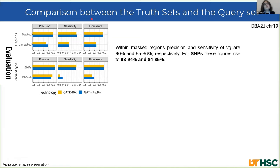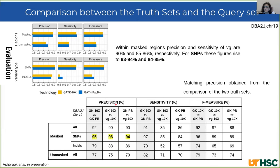This table shows precision, sensitivity, and F-measure for three different comparisons. In the first column, I compared the two truth sets — GATK 10x against GATK PacBio. In the second column, the first truth set against VG. In the third column, the second truth set against VG. The message is that these three different comparisons match for precision and related metrics.